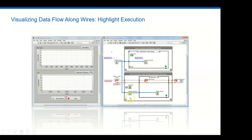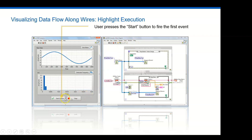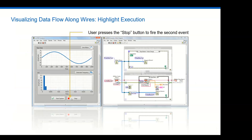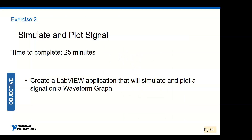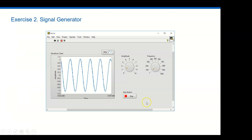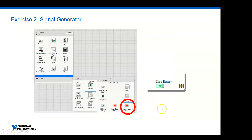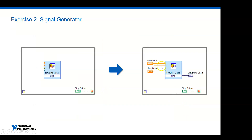We already talked about Highlight Execution - a neat troubleshooting tool. Switch on the light bulb icon and you can see the flow of data through your LabVIEW program. For Exercise 2, we're going to simulate and plot a signal - approximately 25 minutes. The front panel will have a Waveform Chart with controls to select sine wave, and adjust amplitude and frequency.